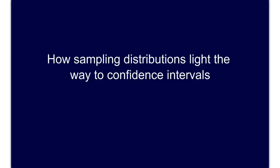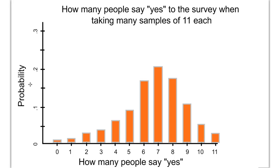Sampling distributions pave the way to understanding confidence intervals. Let's imagine this sampling distribution here from the binomial distribution. The question is, how many people say yes to the survey when taking samples of 11 each?